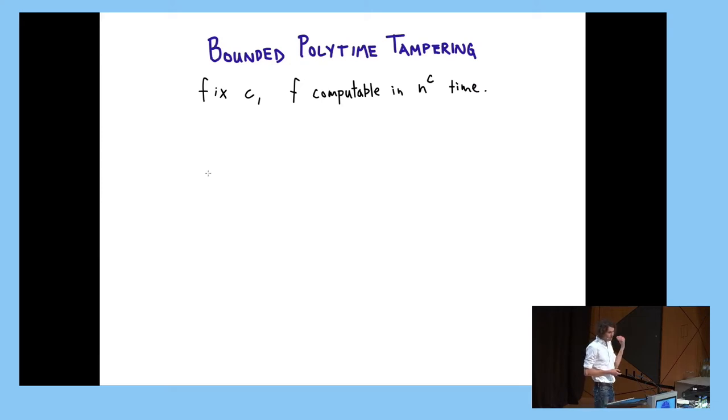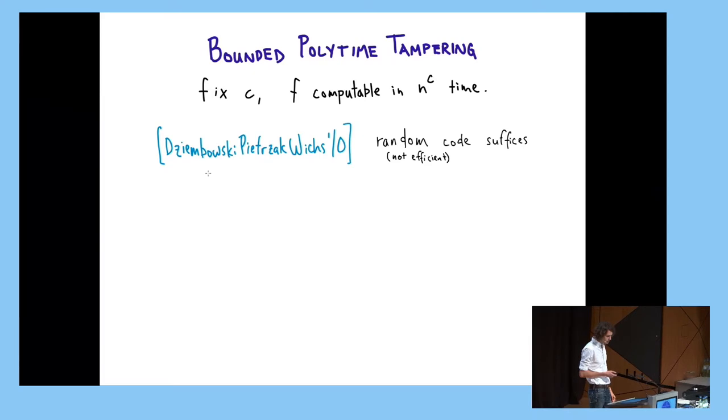But if we bound the tampering function, then we can hope to make progress, and we can simply have encode and decode take more time than the tampering that we're preventing. So if we fix some constant C, and we're concerned now with the function F that's computable in time n to the C, is this possible? So yes, in this original paper, Dziembowski, Pietrzak, and Wichs show that these codes exist using the probabilistic method. But this construction is not efficient.